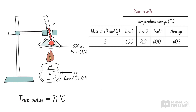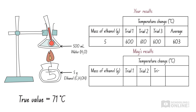Let's go back to the combustion of ethanol experiment. Your classmate, May, performs the experiment using the same method and equipment. Even though her results are slightly different to yours, they agree with each other. When we calculate the average temperature change, we find they are almost identical. Since May's results were consistent with your findings, the experimental procedure is reproducible.